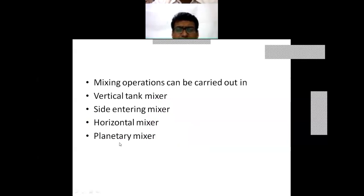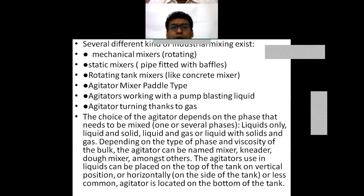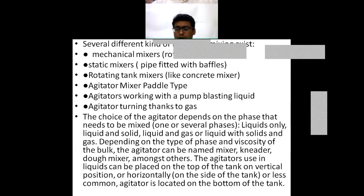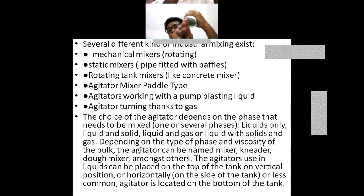There are also planetary mixers and several different kinds of mixing systems. Mechanical mixers include rotating types. Static mixers are a different category — they consist of a certain geometry inside a pipe, such as metal plates or baffles fixed inside, which create turbulence as the fluid flows through. These static mixers are fitted into the pipe with wafers to achieve mixing without any moving parts.